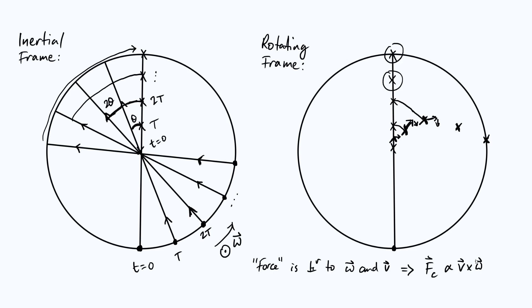If you want to see this derived more rigorously, I do have a video on that as well. Just by considering this simple case of an object moving in a straight line and plotting the position where a rotating observer would see it in their own frame, we can get insight into why the Coriolis force appears in the first place from a physical perspective. This leads to all sorts of real-world effects — for example, if you fire a projectile, it's not actually going to go in a straight line; it's going to bend to its right. I hope this gives you a bit of insight into where the Coriolis force comes from, and I'll see you again soon for some more physics and maths.